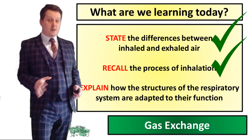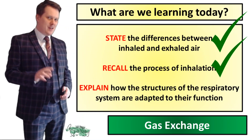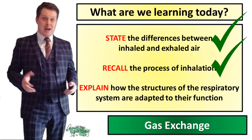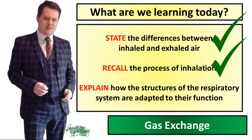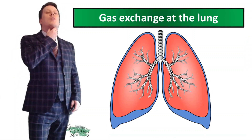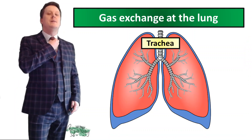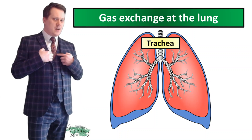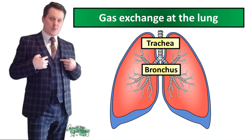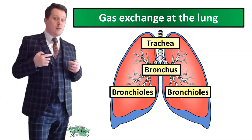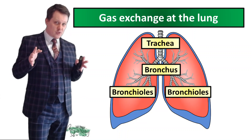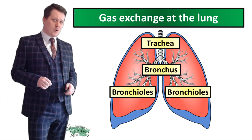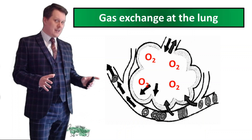So now we've looked at the differences between inhaled and exhaled air and recalled the process of inhalation and exhalation. Next we need to explain how the structures of the respiratory system are adapted for their function. Starting at the very top you've got your trachea, also known as the windpipe. The trachea branches off into each lung through a bronchus, and these bronchi then have smaller branches called bronchioles. At the end of these bronchioles we have the alveoli.